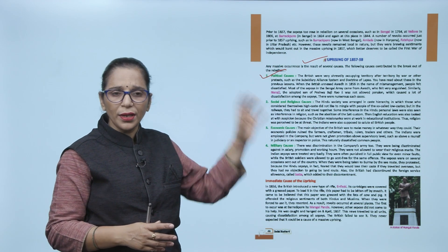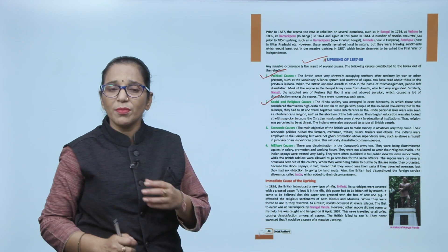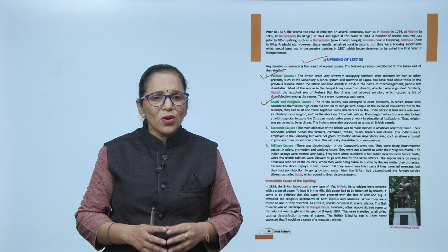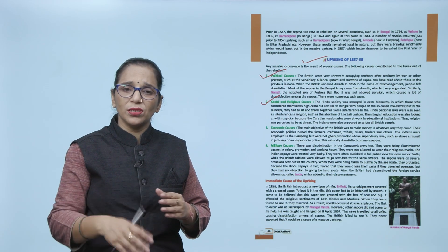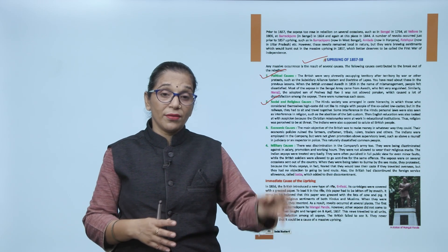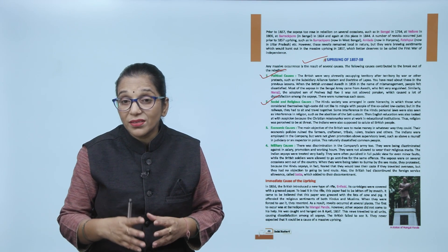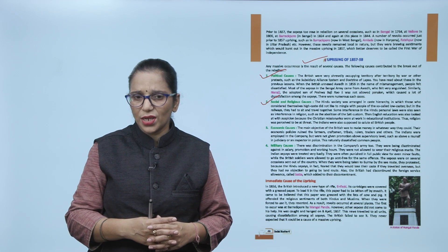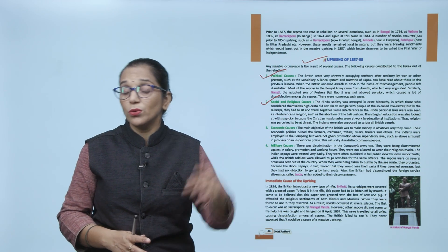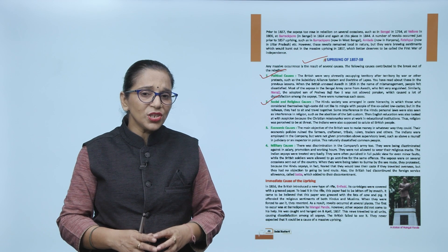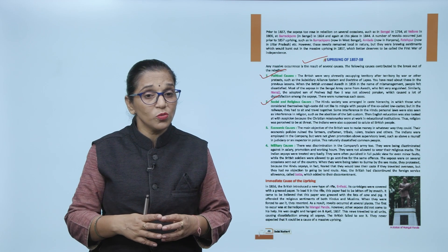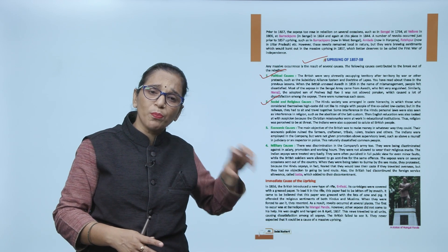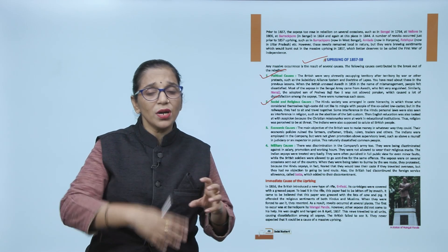Social and religious causes - Hindu society had its own religious customs, caste hierarchy, varna system. They did not like to mingle with other caste people, especially the low caste or untouchables. But in the railway they had to sit and travel together. Some interference in Hindu personal laws was also very dissatisfactory for them. Although we feel good that the sati custom was abolished, which was very good, but orthodox Hindu people felt bad that this is interference in our customs. The English education was also looked at with suspicion because they thought it was being used to convert Indian children to Christianity.